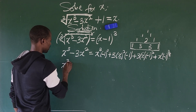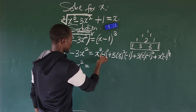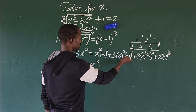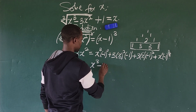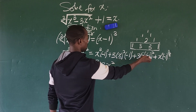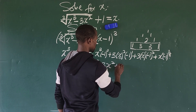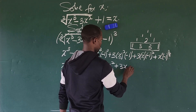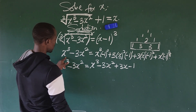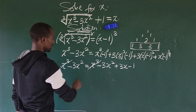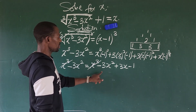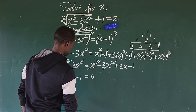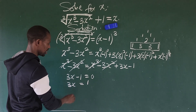Opening this up, we have x cubed minus 3x squared on the left, equal to: (minus 1) to the power of zero gives 1, so we get x cubed; minus 1 times 3x squared gives minus 3x squared; (minus 1) squared gives plus 1, so we get plus 3x; and (minus 1) cubed gives minus 1, and x to the power of zero gives 1, so the last term is minus 1.